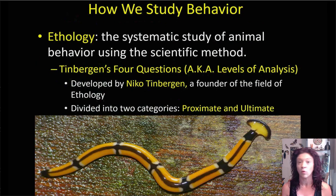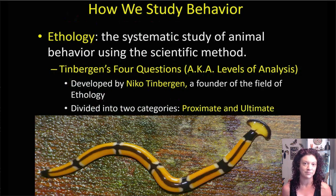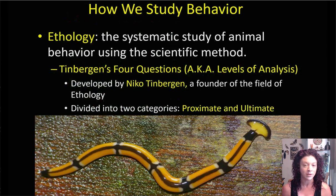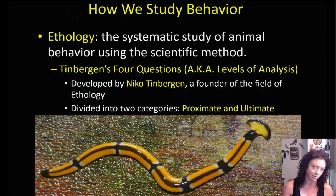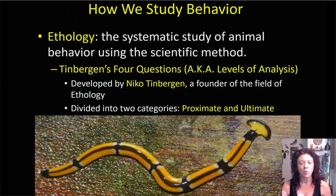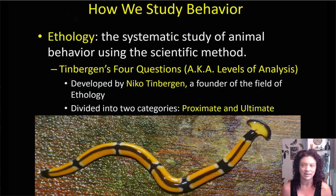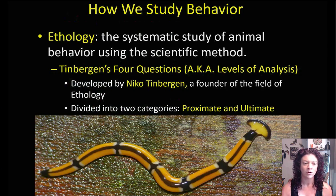Ethology is the systematic or organized study of animal behavior using the scientific method. We are going to spend an entire lecture talking about the scientific approach to answering questions, which involves using the scientific method to gather data and then interpret that data. The way that ethology as a field has been structured for the last 80 years or so is around what are called Tinbergen's four questions.